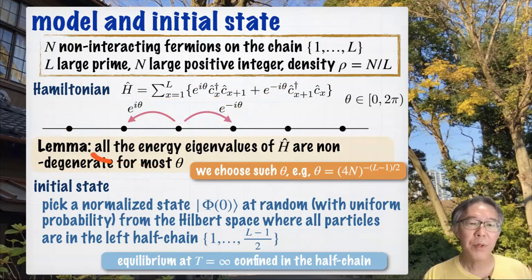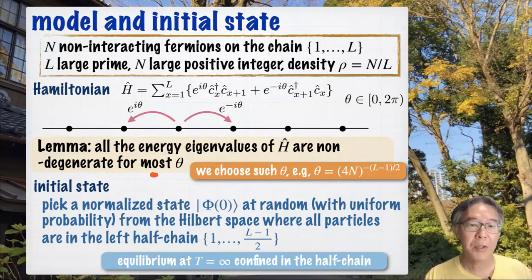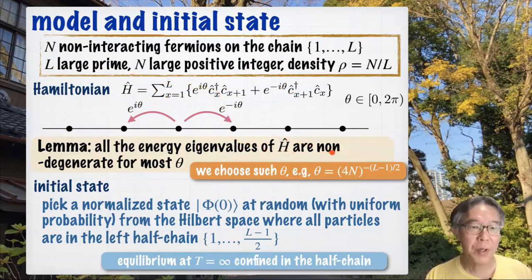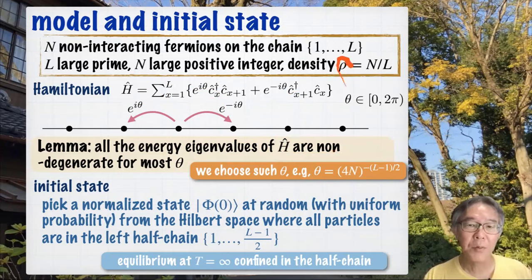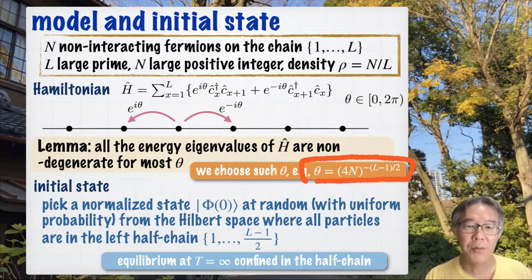We can prove that the energy eigenvalues of this many-body Hamiltonian H are non-degenerate for most values of θ. Except for a finite number of values of θ, the spectrum of the many-body system is free from degeneracy — that is something we can prove. More concretely, it is sufficient to choose θ very small. I guarantee that H has no degeneracy at all.